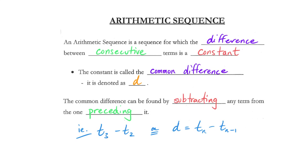Hey everybody. Today we've got the title on the screen: Arithmetic Sequence. So Arithmetic Sequence — what we're going to talk about today is a particular type of sequence. We've been introduced to what sequences are generically, but today we're going to focus in on a particular kind. On this first screen we have a bunch of terminology and notation, all zeroing in on an Arithmetic Sequence. The definition is just a sequence for which the difference between consecutive terms is constant.